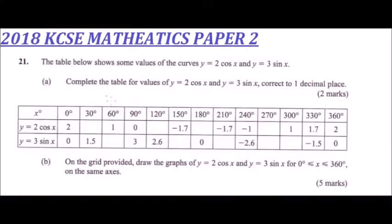2018 KCSE Mathematics Paper 2, question number 21. The table below shows some values of curves y equals 2 cos x and y equals 3 sin x. Complete the table for the values of y equals 2 cos x and y equals 3 sin x, correct to 1 decimal place. Now, here you use your calculator and just substitute the value of x. We are given the row of x here.